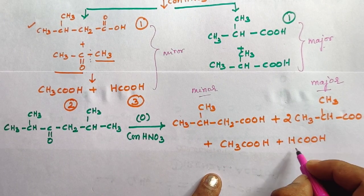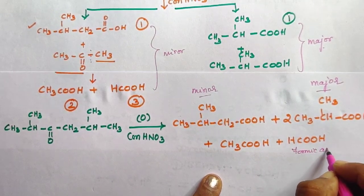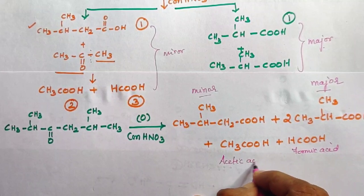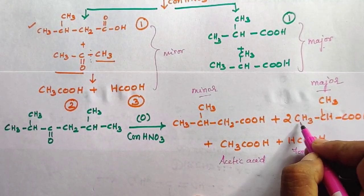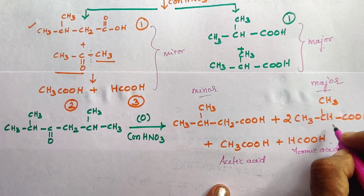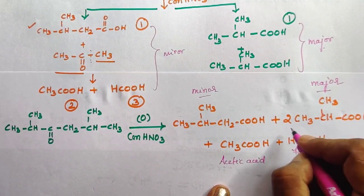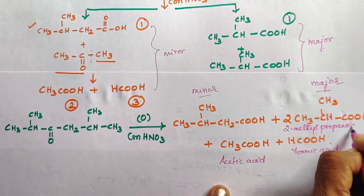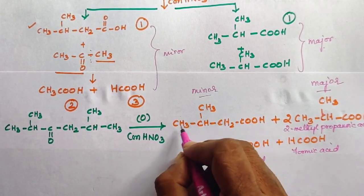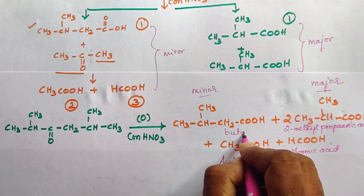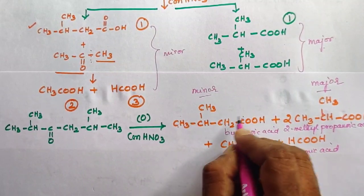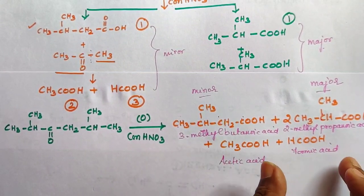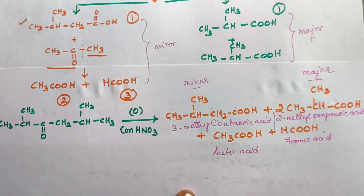The names of the acids: formic acid is methanoic acid (HCOOH). Acetic acid is ethanoic acid (CH3COOH). The three-carbon acid with a methyl group is 2-methylpropanoic acid. The four-carbon acid with a methyl group at the third carbon is 3-methylbutanoic acid. So these are the IUPAC names of all the acid products formed.